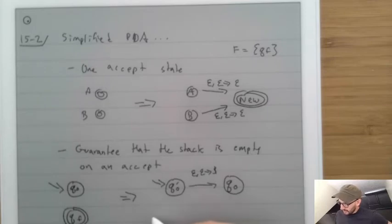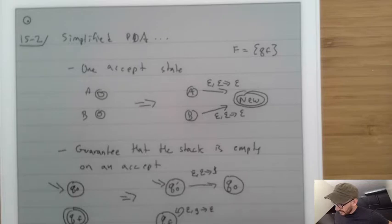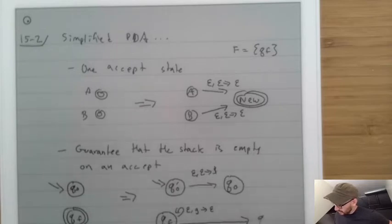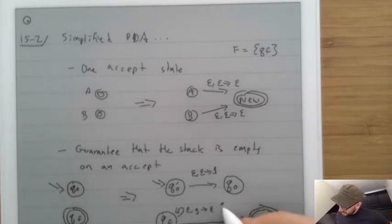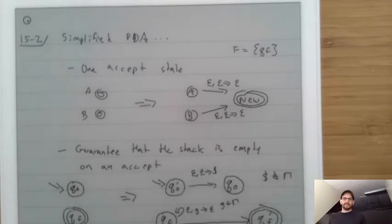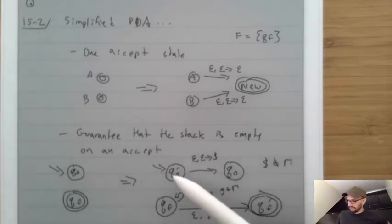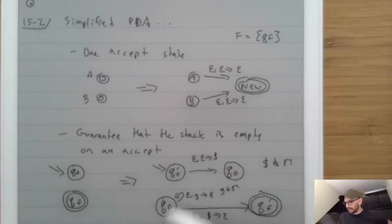Then we make it so that when we come into QF, we pop everything off. We have a rule that says on epsilon and some g, we convert that to epsilon; and then epsilon, dollar-sign → epsilon goes to new QF, which is the real accepting state. Each g is inside gamma, and dollar-sign is not inside gamma. So the idea is we push that symbol at the beginning with a new start state, and at the end state we consume everything until we hit dollar-sign.